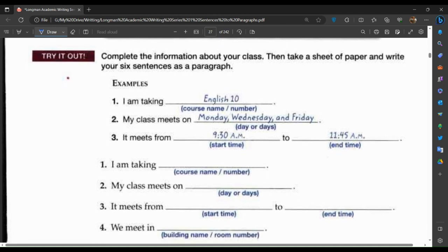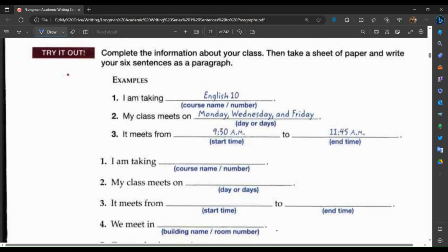Now try it out. Complete the information about your class. Then take a sheet of paper and write your six sentences as a paragraph. I'm taking English 10, course name number. My class meets on Monday, Wednesday, and Friday. It meets from 9:30 a.m. to 11:45 a.m.